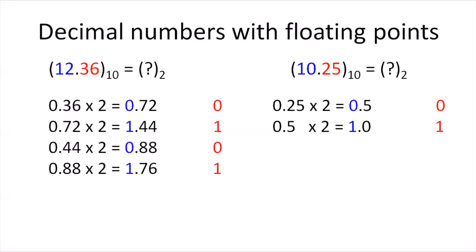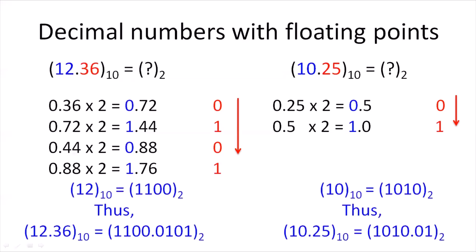In order to get the binary value after the decimal point, we read the listing in a top-down fashion. Thus, the binary equivalent of 12.36 base 10 is 1100.0101 considering up to 4 decimal places, and the binary equivalent of 10.25 is 1010.01.